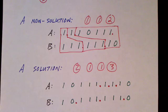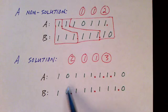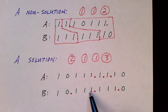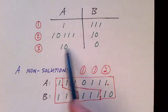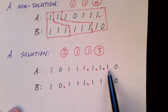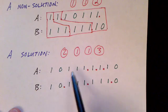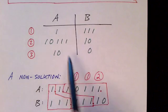Here is another sequence of tiles and you can see that this is a solution. Here we are using tile 2, 10111, and 10 on the bottom. Then tile 1 which is a 1 on top and a 111 on the bottom. And finally tile 3, 10 on the A side and 0 on the B side. And you can see this time the two strings do match up. So this is a solution to this instance of the problem.